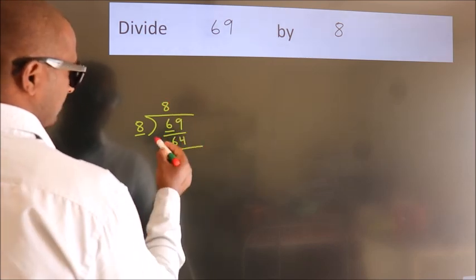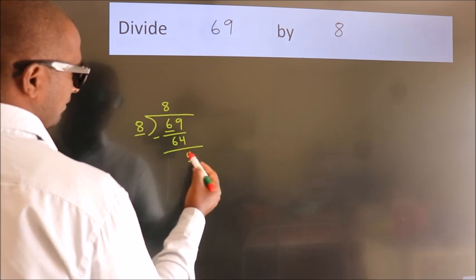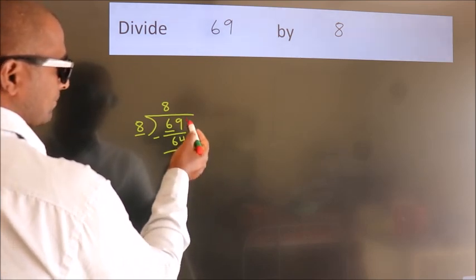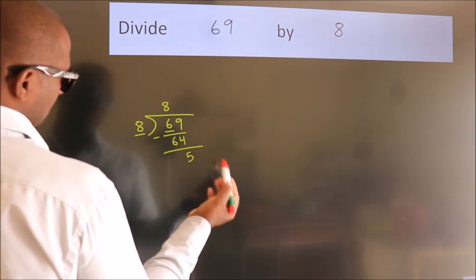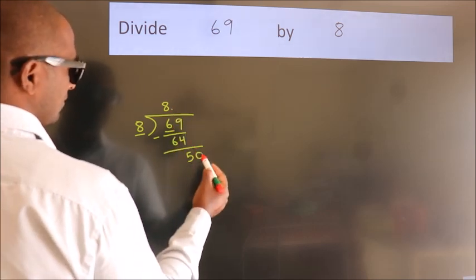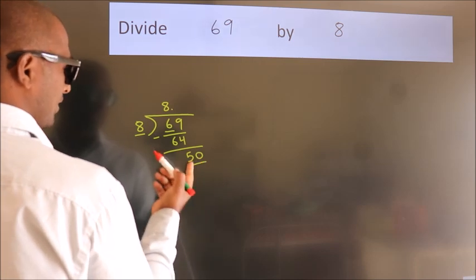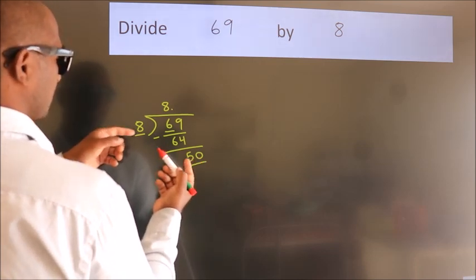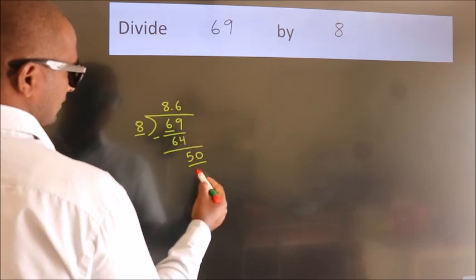Now we should subtract. We get 5. After this, no more numbers to bring it down. So what we do is we put a dot, take 0, so 50. A number close to 50 in the 8 table is 8 times 6, 48.